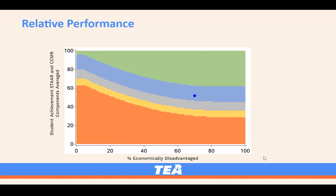Part B, or relative performance, has no change in the methodology. It still compares your STAR performance on the y-axis to the schools with the same economically disadvantaged percent on the x-axis. For high schools, the average of STAR and CCMR are used. The scaled score will be used to average that CCMR and STAR. In the past, the raw score was used. This change can have a positive impact on the high schools since the CCMR cut score increased.